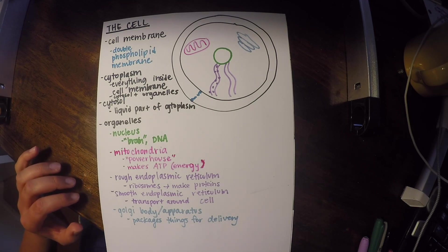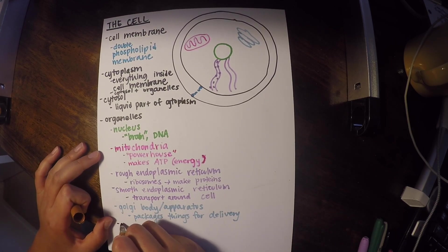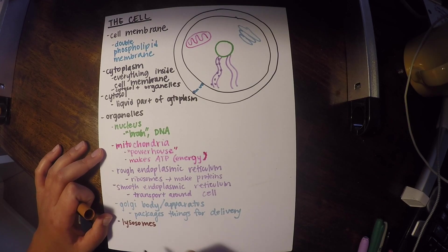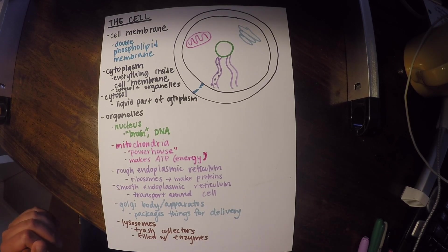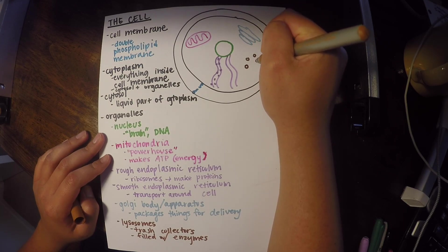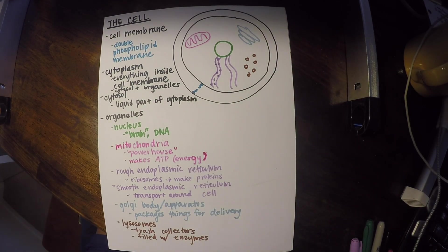And the last organelle that we're going to discuss is called lysosomes. And those are essentially our trash collectors. And it's actually filled with enzymes. And that's important because enzymes help break things down. So it kind of collects the trash and then breaks it down. So lysosomes are little spherical structures as well. So we're just going to draw them as little dots right there. And these can move around the cell as well.